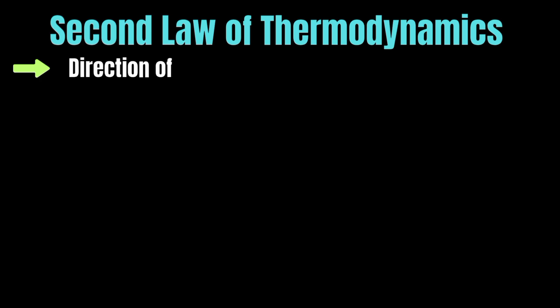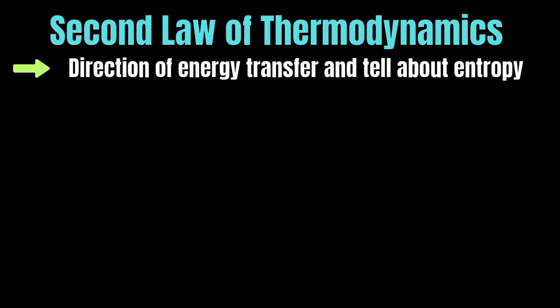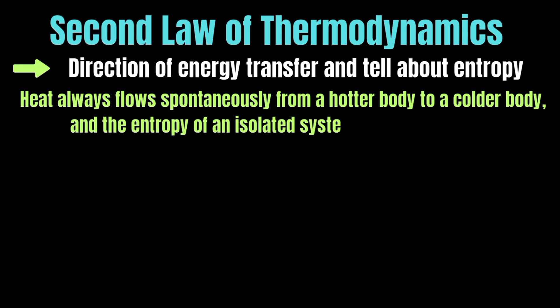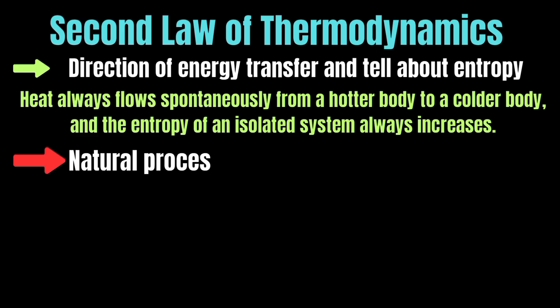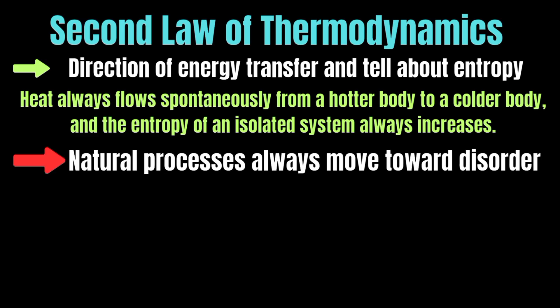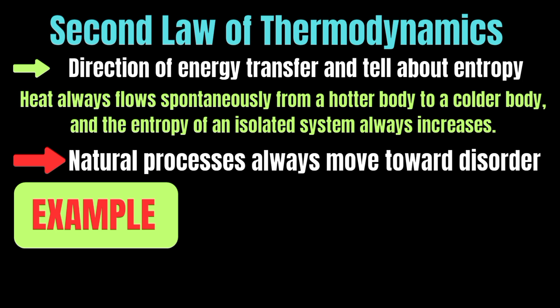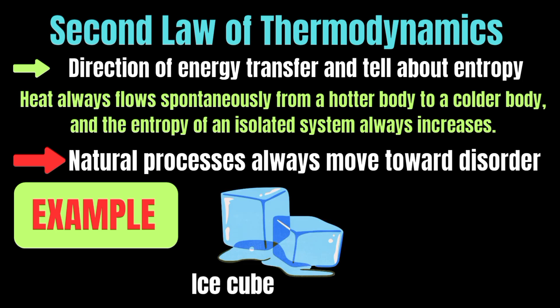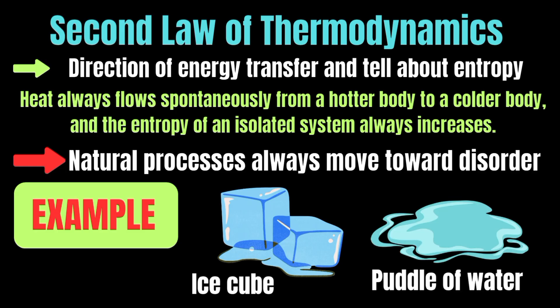The second law of thermodynamics tells us about the direction of energy transfer and introduces the concept of entropy. It states that heat always flows spontaneously from a hotter body to a colder body, and the entropy of an isolated system always increases. Natural processes always move toward disorder unless energy is added to maintain order. For example, an ice cube left at room temperature melts on its own because heat flows from the warmer surroundings to the colder ice, but a puddle of water does not freeze by itself unless energy is removed.